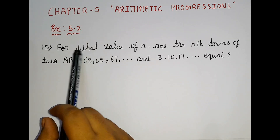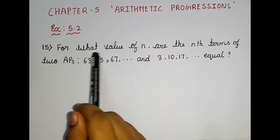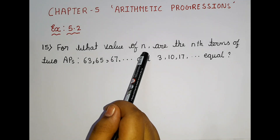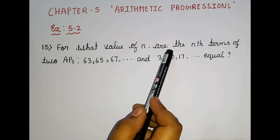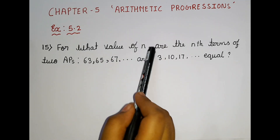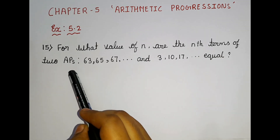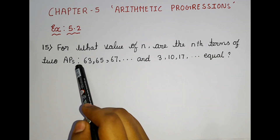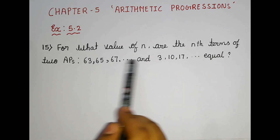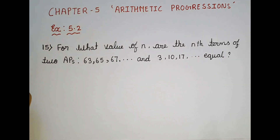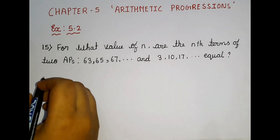Now let's read the question: For what value of n are the nth terms of two APs — 63, 65, 67 and so on, and 3, 10, 17 and so on — equal? So here there is a value for n but we don't have the value. We have two APs, so let us write the two APs first. Then only you will understand.